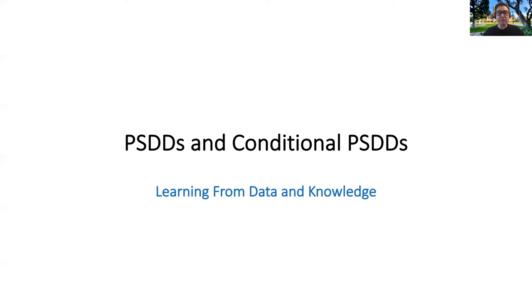Welcome everyone back to 264A Automated Reasoning. Today we will be transitioning into the applications part of the course, talking about learning from a combination of data and knowledge. We will be introducing new circuit types based on sentential decision diagrams, or SDDs, studied last week. These new circuit types — probabilistic SDDs, or PSDDs, and their conditional version — are used to represent probability distributions.